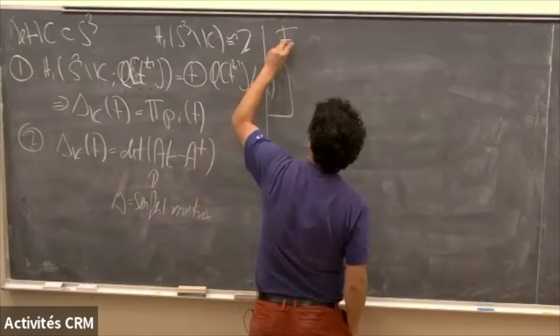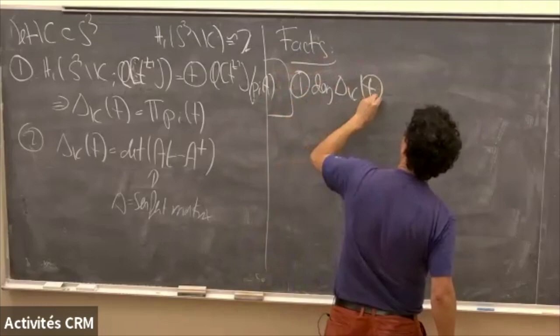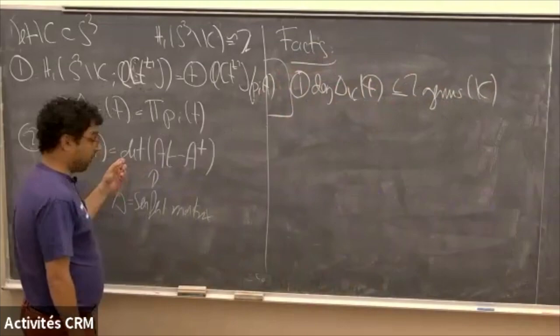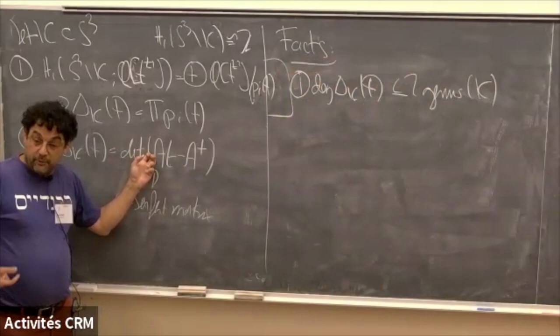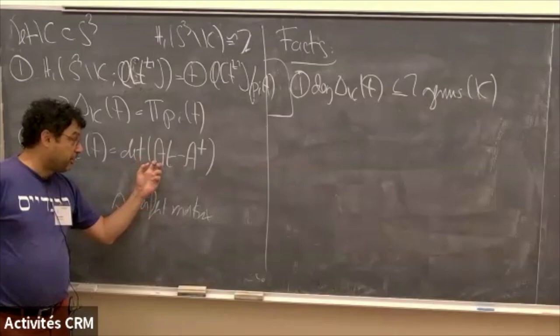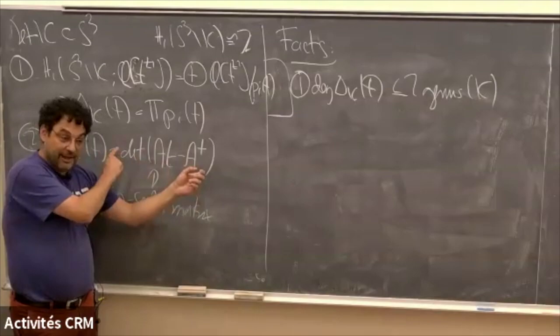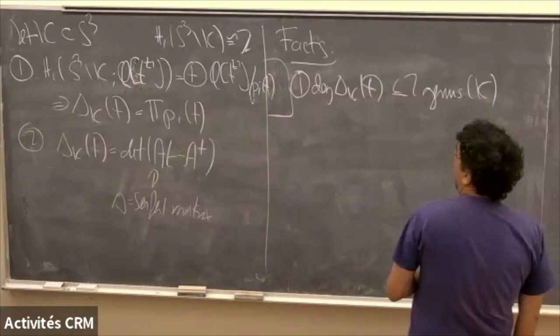Now let me remind you of some facts about the Alexander polynomial. First, the degree of the Alexander polynomial is less than or equal to twice the genus of K. This is not hard to see from the second definition: if A comes from a Seifert surface of genus g, then A is a 2g × 2g matrix with integer entries, and it's basic linear algebra to see that the degree of det(tA - Aᵀ) is at most 2g.